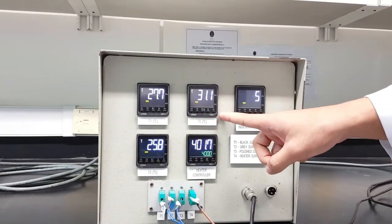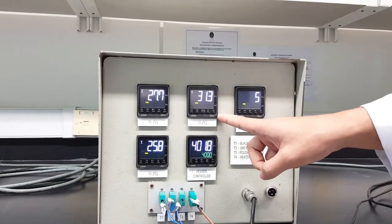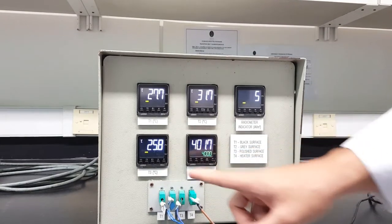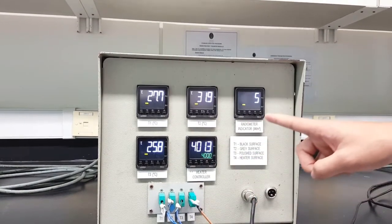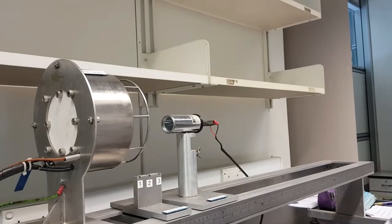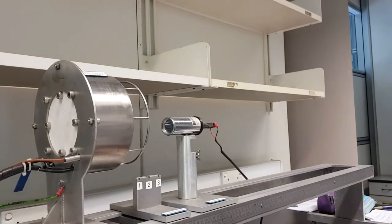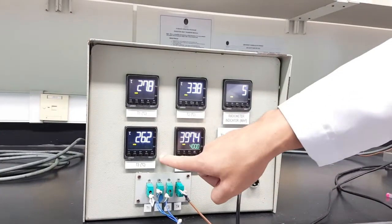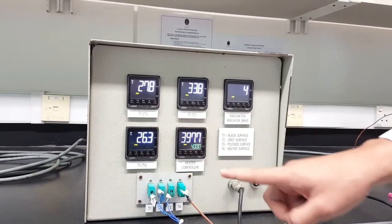Then, we replace it with a polished surface plate. So, we record the T3 as an ambient temperature and T4 and radiometer indicator.